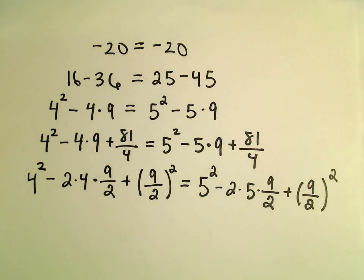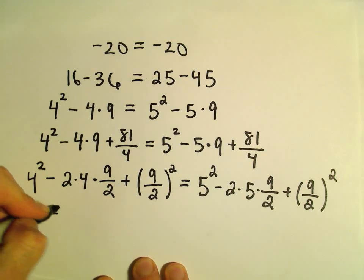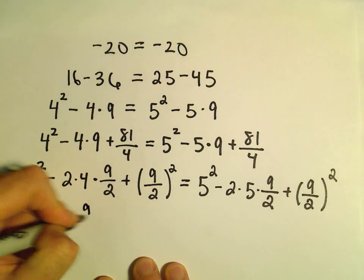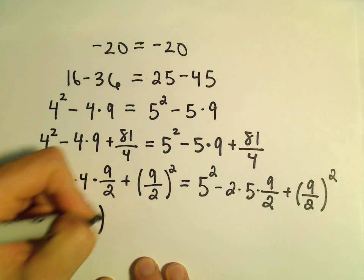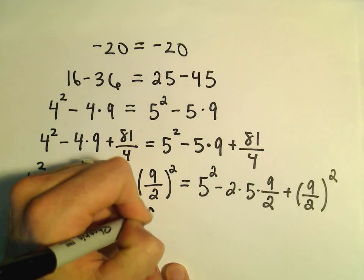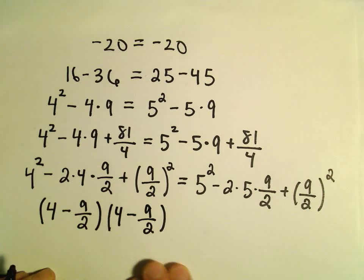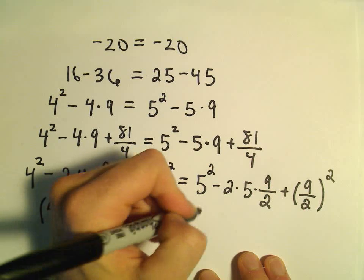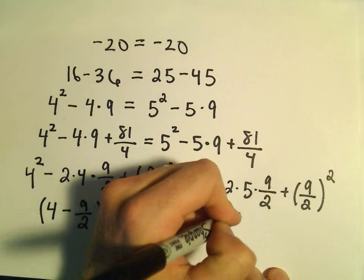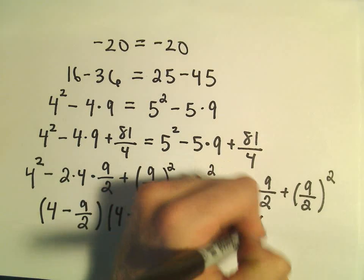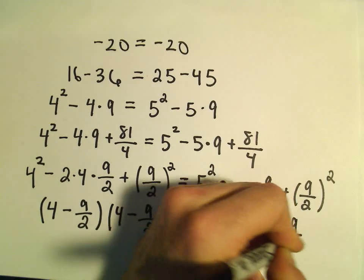This factors as 4 minus 9 over 2 times 4 minus 9 over 2. The right side factors as 5 minus 9 over 2 times 5 minus 9 over 2.